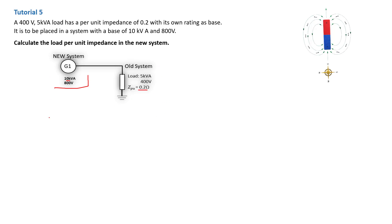Now they're asking us to calculate the load per unit impedance in the new system. This means the combination of the old system and the new system is becoming one system. We need to calculate the load per unit impedance in the new system because this is now going to be implemented with the new system.